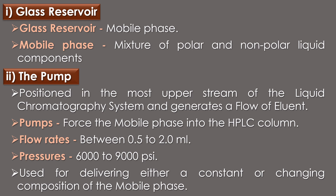The pump is positioned at the most upstream part of the liquid chromatography system and generates a flow of eluent from the solvent reservoir into the system. The role of the pump is to force the mobile phase into the HPLC column at desired flow rates, expressed as mL per minute. Flow rates between 0.5 to 2 mL/min are usually sufficient for most experiments. Pumps in modern instruments can reach pressures in a range of 6000 to 9000 psi. Pumps can be used for delivering either a constant (isocratic) or changing (gradient) composition of the mobile phase.